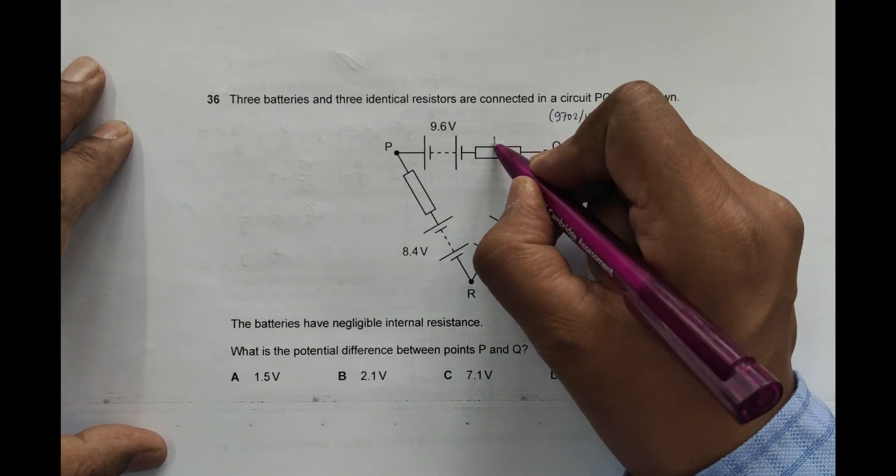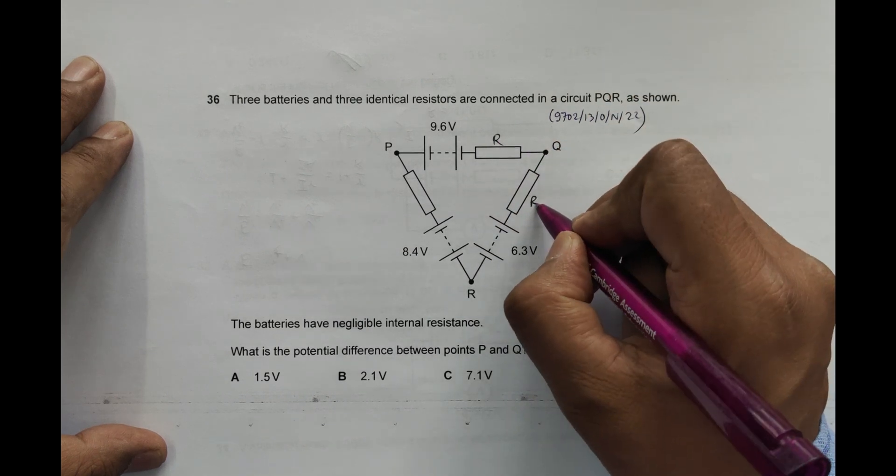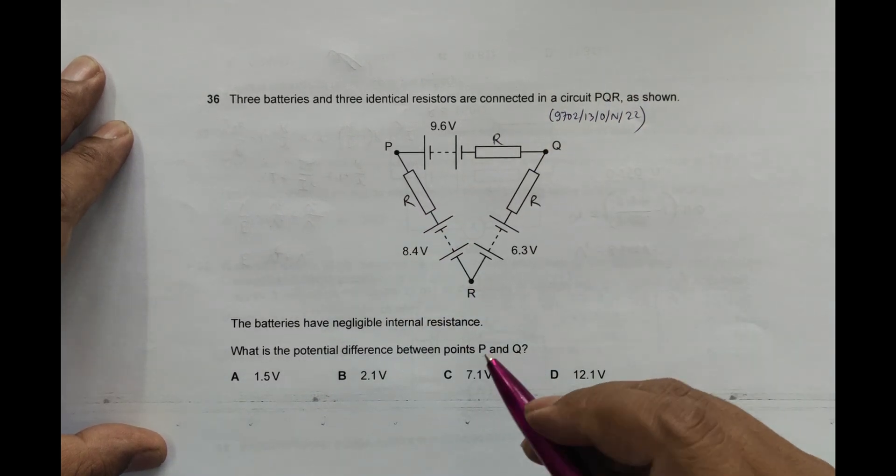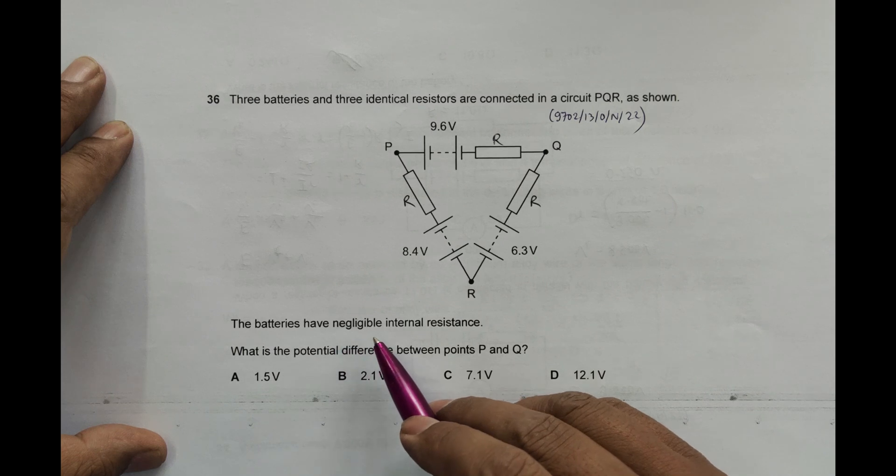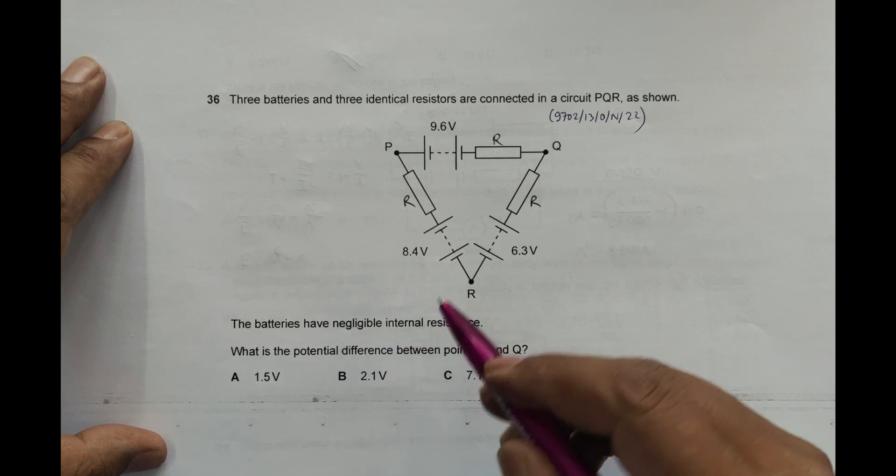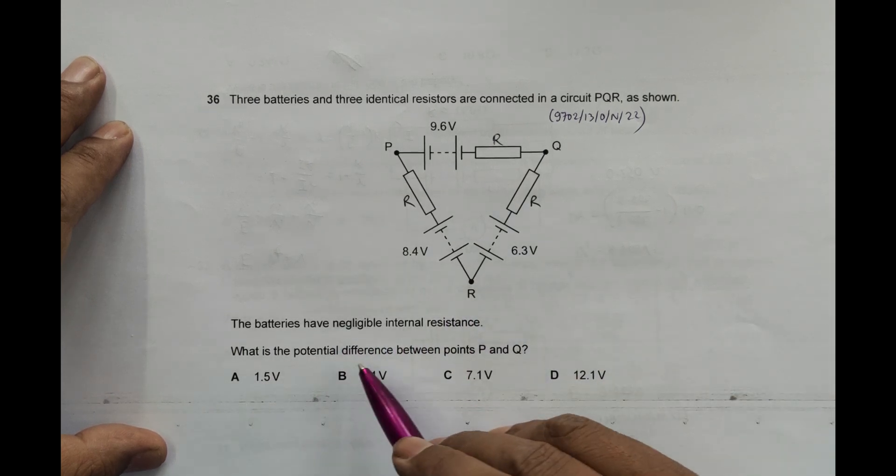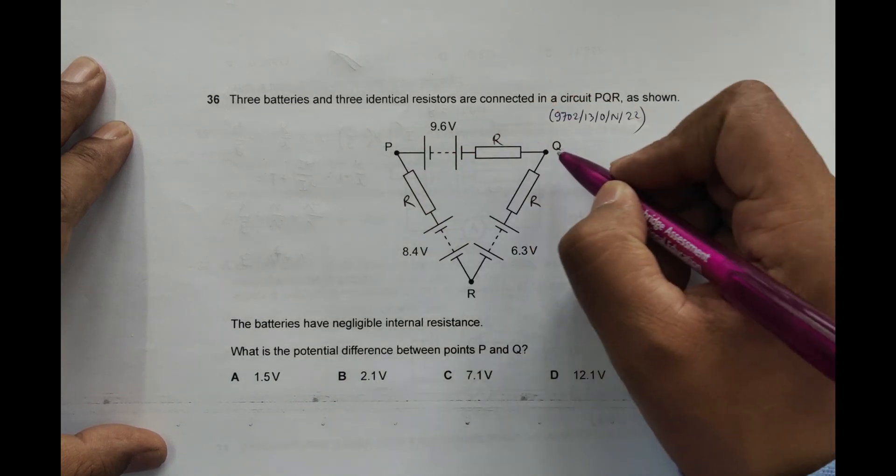Let's say that the resistances are R, R, and R. The batteries have negligible internal resistance. What is the potential difference across points P and Q? So we have to find VP-Q.